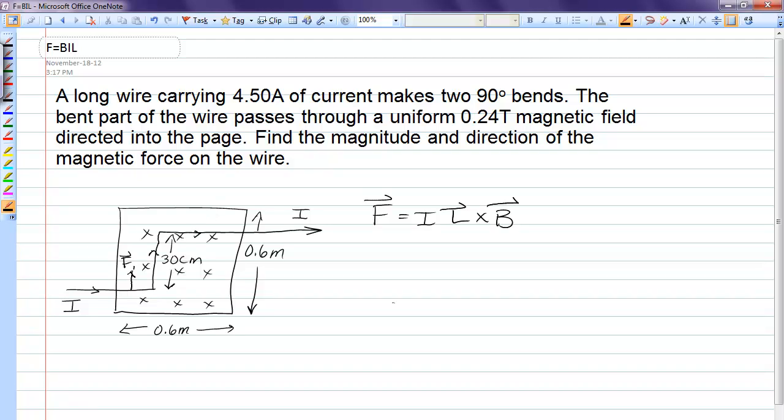If we do the same thing for this top horizontal piece, the force F2 is also up. And then doing this vertical piece of wire, we find that the force is left. I'll call that one F3.